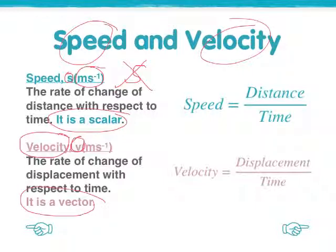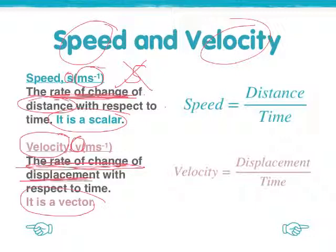Let's have a look at the definition for velocity and speed. We use this expression, rate of change. So speed would be the rate of change of distance with respect to time. And velocity would be the rate of change of displacement. Similarly, a quick reminder of how to calculate it.